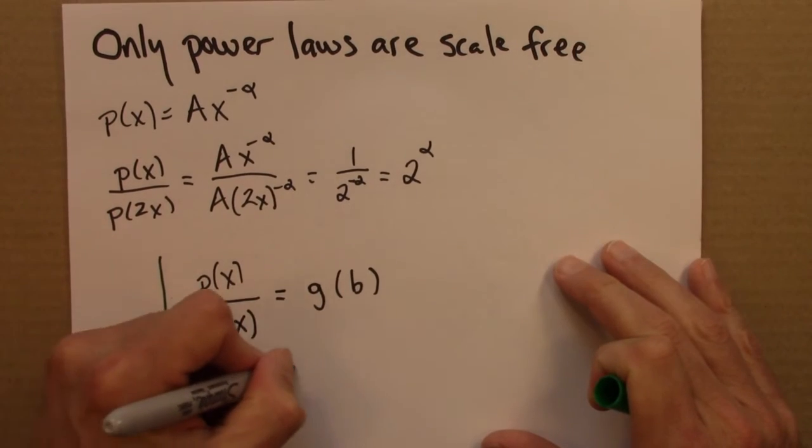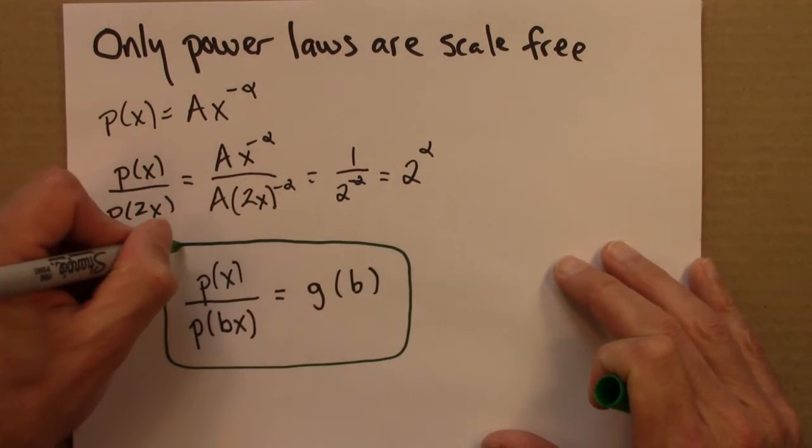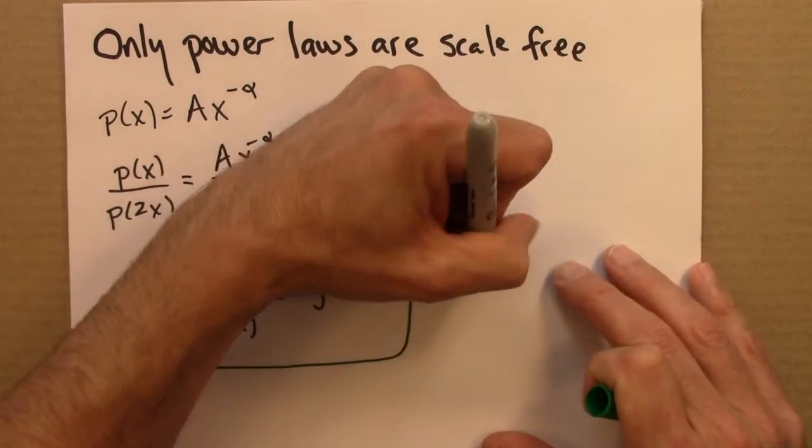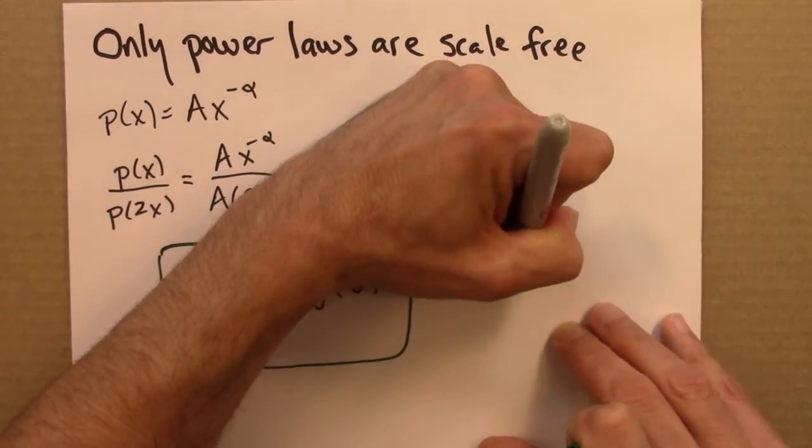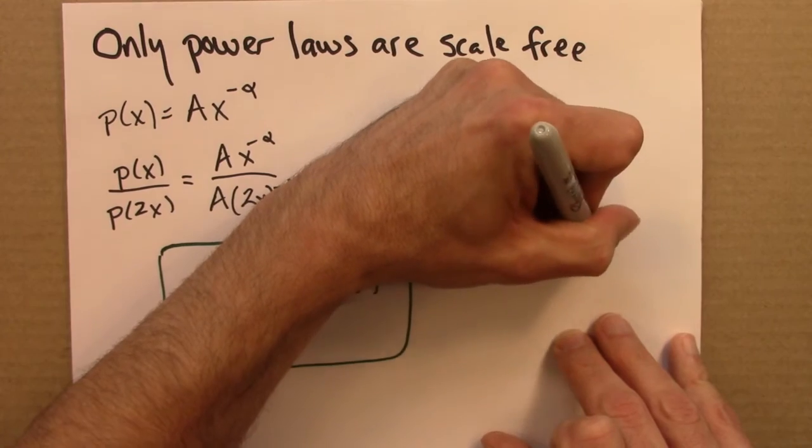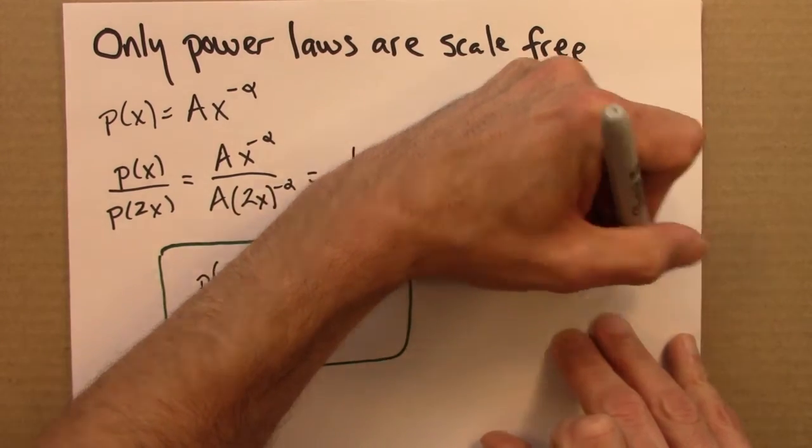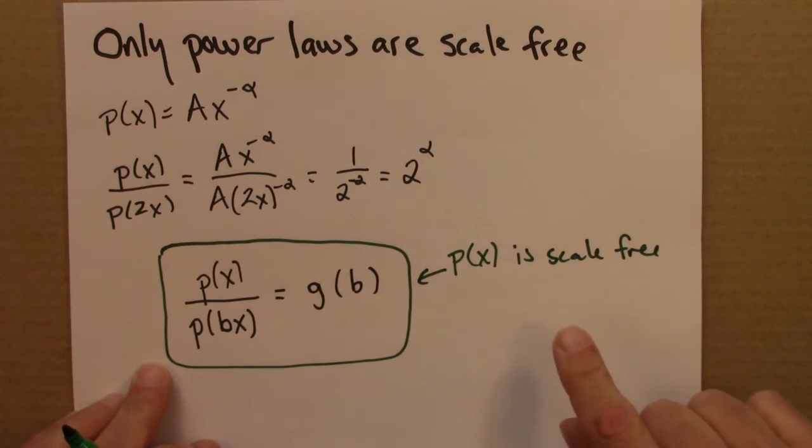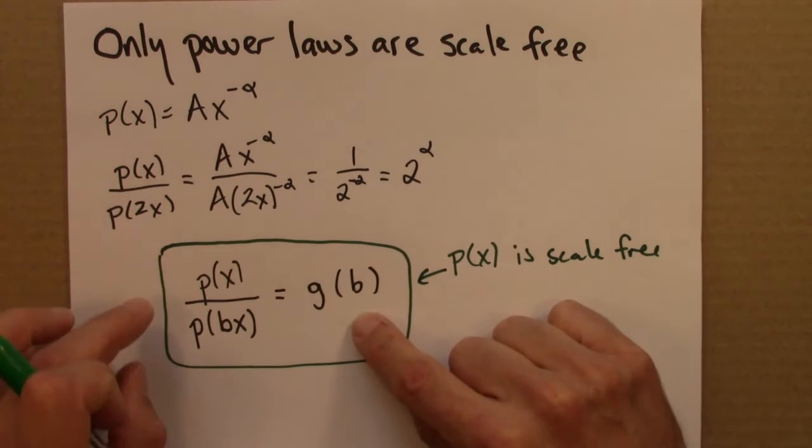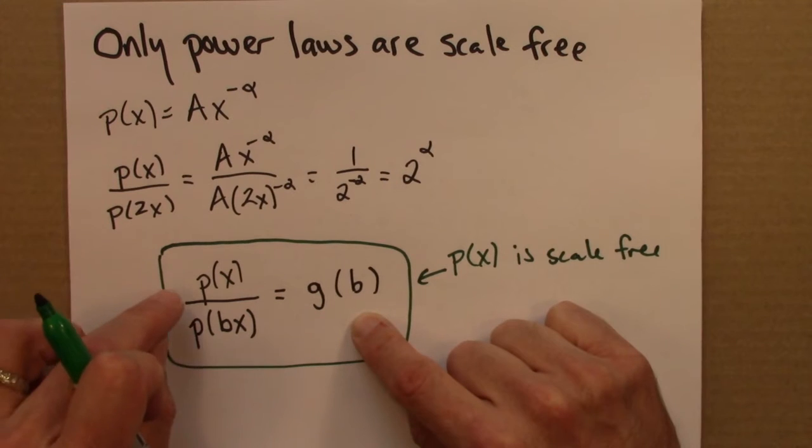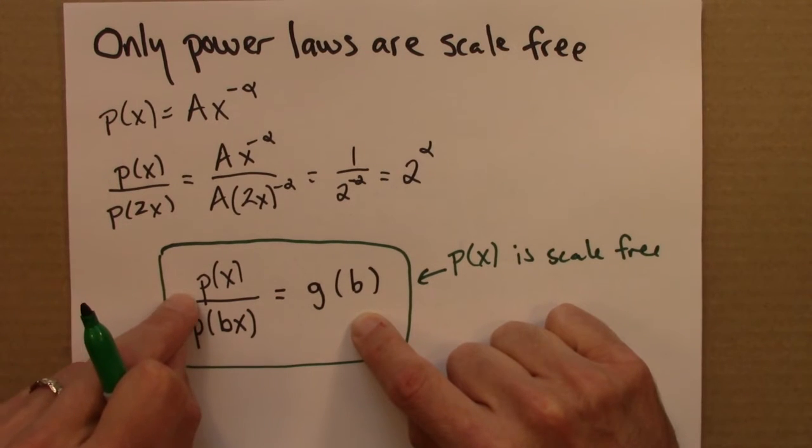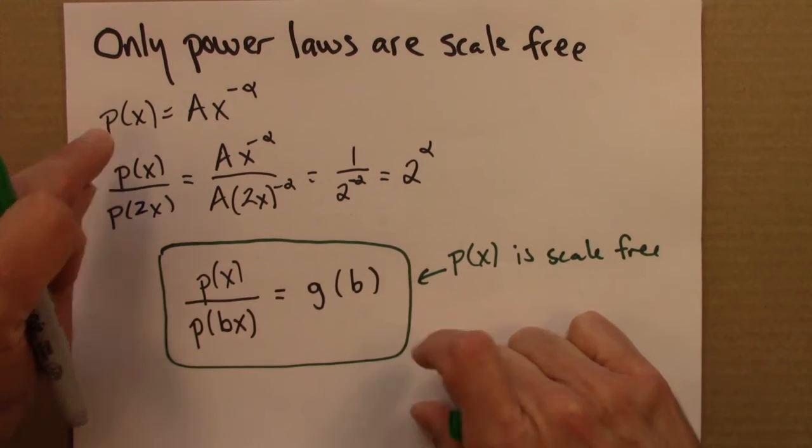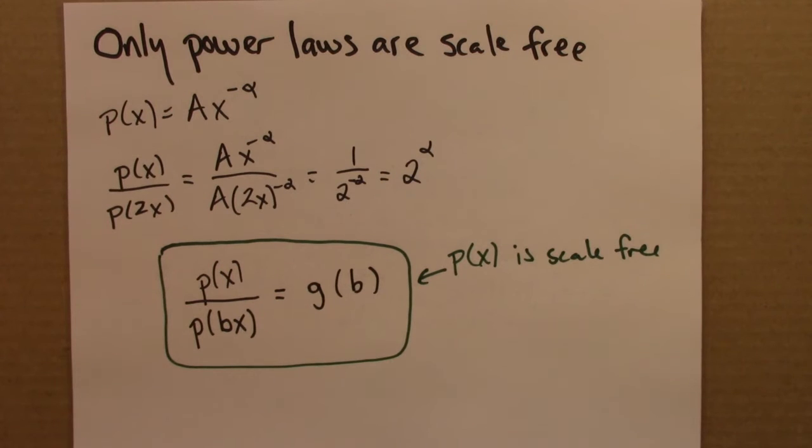So the question is, starting from here, this is saying that P of x is scale free. So that's what this equation says. And what I want to see is, can I take this equation and show that, and solve for P of x somehow, that this has to then give me a power law. And so that requires a little bit of indirect reasoning.